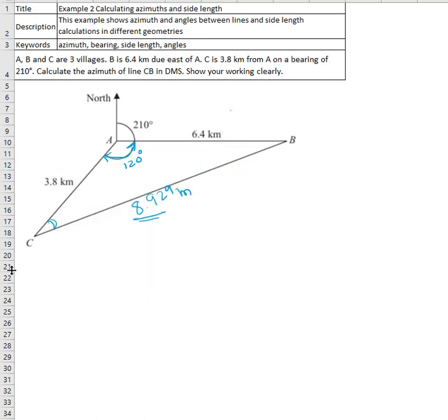Now we continue. Here we just put the length of the line that we calculated earlier. Then the law of sines using this angle and the opposite side, and this angle and the opposite side.